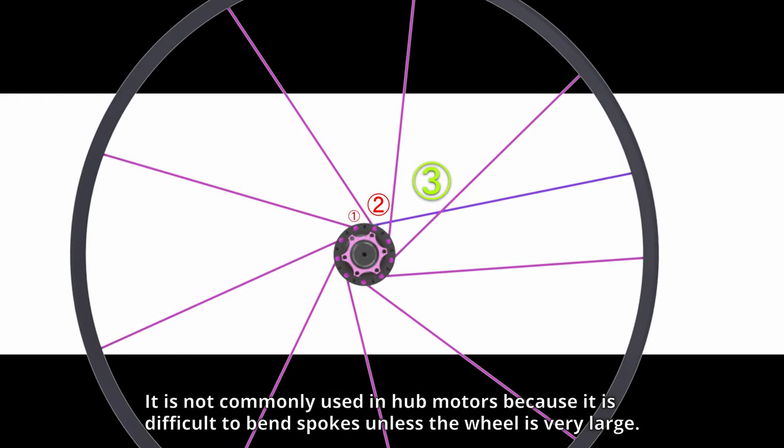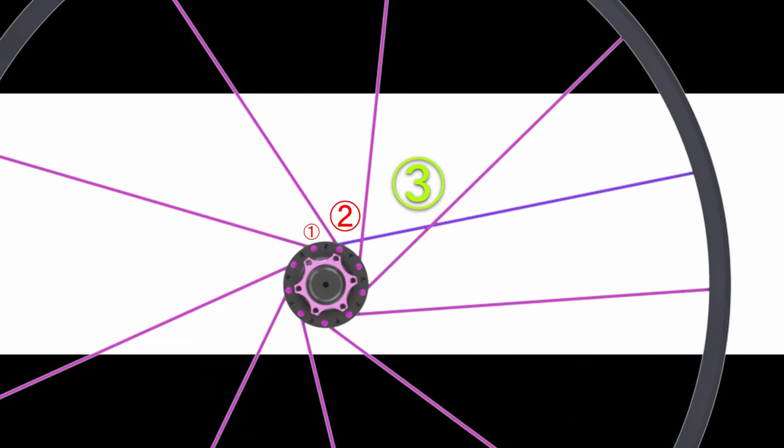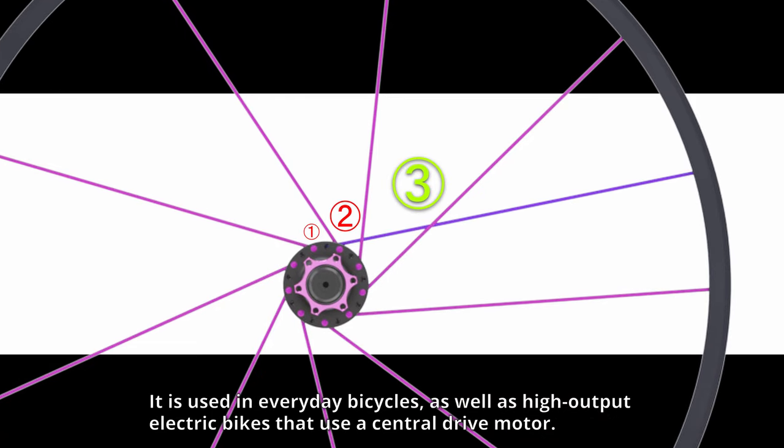It is not commonly used in hub motors because it is difficult to bend spokes unless the wheel is very large. It is used in everyday bicycles, as well as high output electric bikes that use a central drive motor.